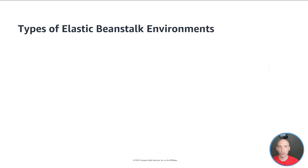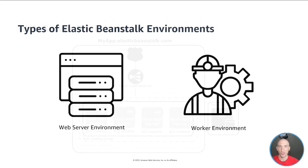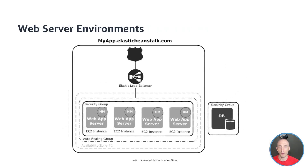As mentioned, there are two types of Elastic Beanstalk environments: the web server environment and the worker environment. Let's take a look at each of them and why we would use them in certain scenarios. This diagram is really helpful to identify all the underlying pieces that go into when you create an Elastic Beanstalk instance.